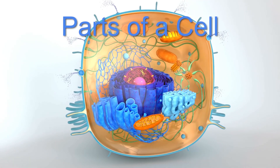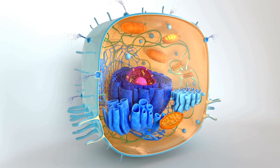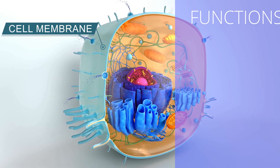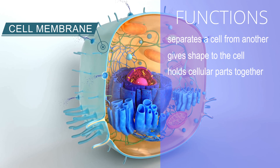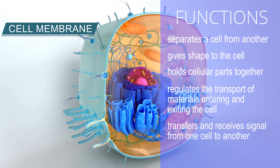A cell has three basic parts. The cell membrane is the outermost boundary of the cell. It separates a cell from another, gives shape to the cell, and holds cellular parts together. It regulates the transport of materials entering and exiting the cell, and transfers and receives signals from one cell to another.